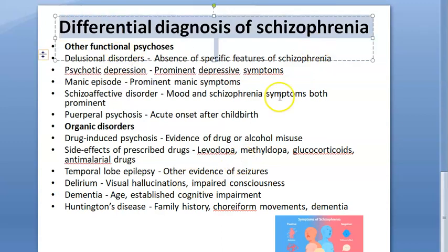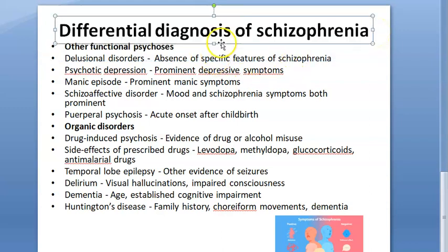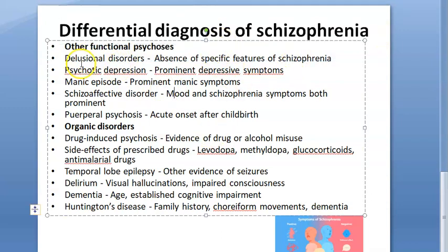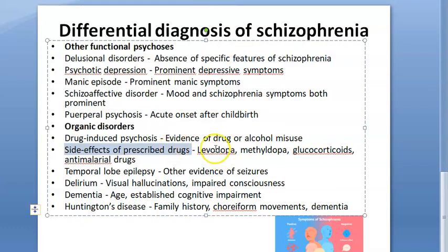In this video, let us look at the differential diagnosis of schizophrenia — that is, if you are considering schizophrenia in a patient, what should you rule out? Could it actually be some organic disorder, where you can identify and remove the cause? For example, drugs like levodopa or methyldopa, used for Parkinson's, or steroids, or anti-malarial drugs can all cause schizophrenia-like behavior.